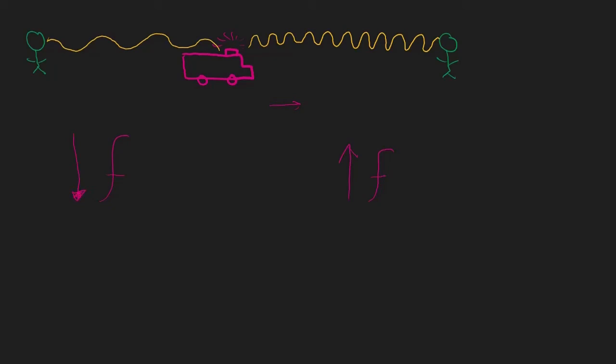For the purposes of the MCAT, we don't need to know mathematically how to do the calculation. There is a formula — you probably learned it in physics class and you can look it up online — but you don't need to know it for the MCAT. All you need to know is that as the source of the sound is moving toward an observer, the frequency increases, and as the source is moving away from the observer, the frequency decreases.